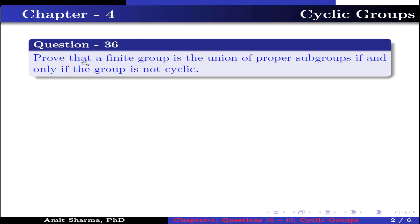Question number 36: Prove that a finite group is the union of proper subgroups if and only if the group is not cyclic.